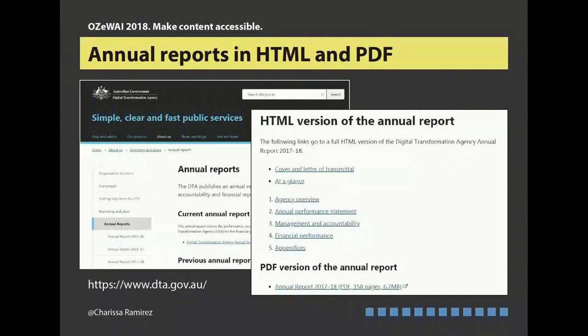The very difficult part in making annual reports accessible is the financial transactions — very, very difficult because of the tables. But somehow we can start to manage putting tables online, and that works with assistive technologies as long as you put the header rows, the column that describes whatever the tag, the rows, so that you can know where you are in any cell of the table. Then you download the PDF and the PDF is accessible.